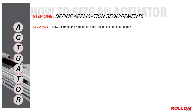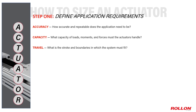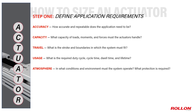Accuracy defines the closeness to desired position as well as the repeatability possible with the given actuator. Capacity is the load's moments and forces an actuator can bear. Travel is the stroke needed to traverse the axis. Usage encompasses duty cycle, dwell time, and expected design life. Atmosphere includes details about how dirty or extreme the operating setting will be.